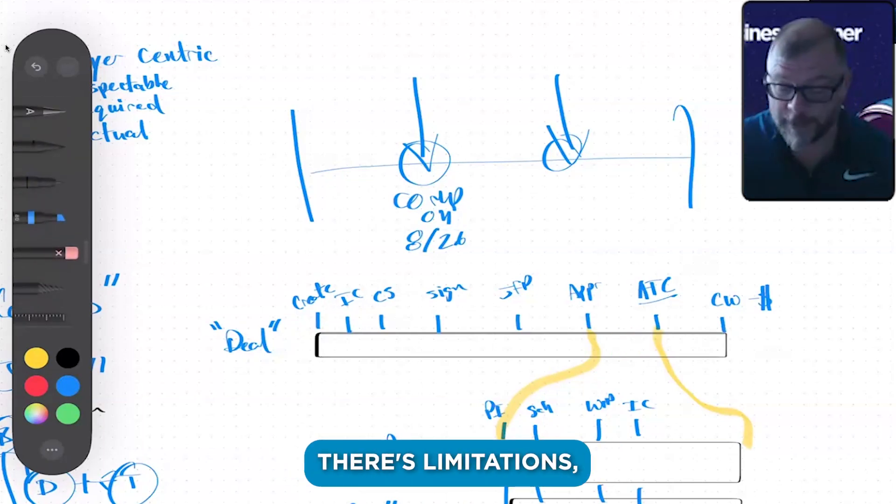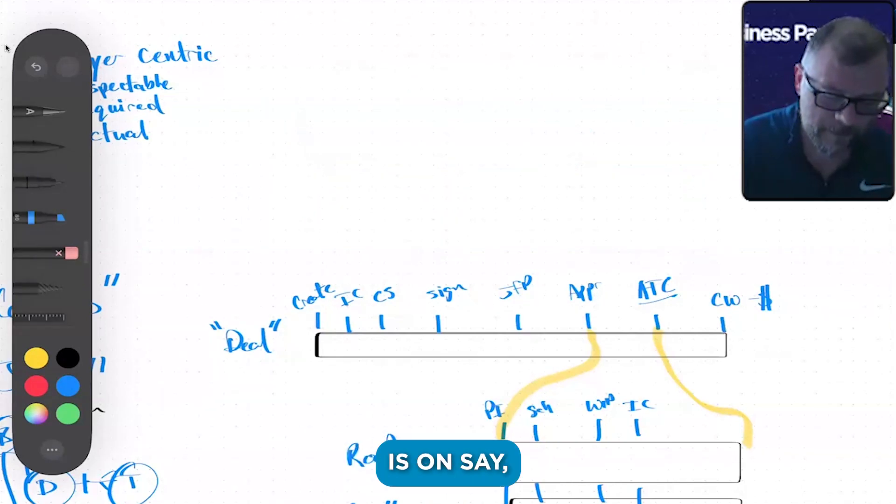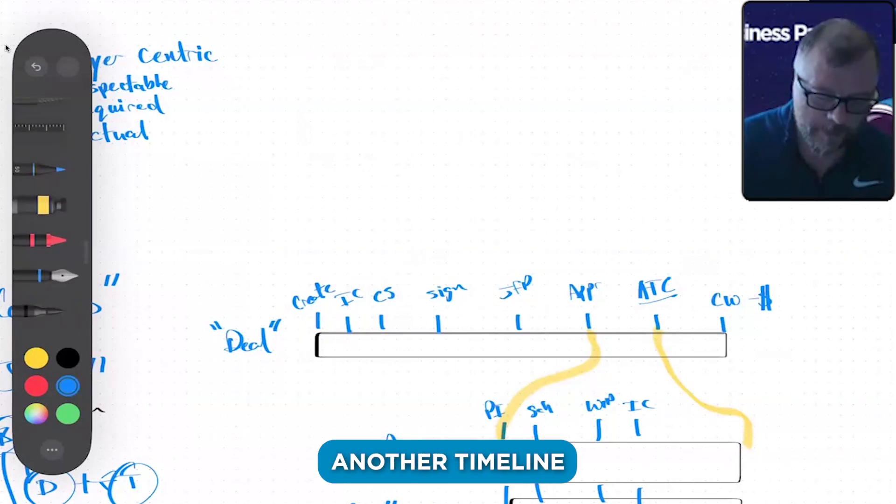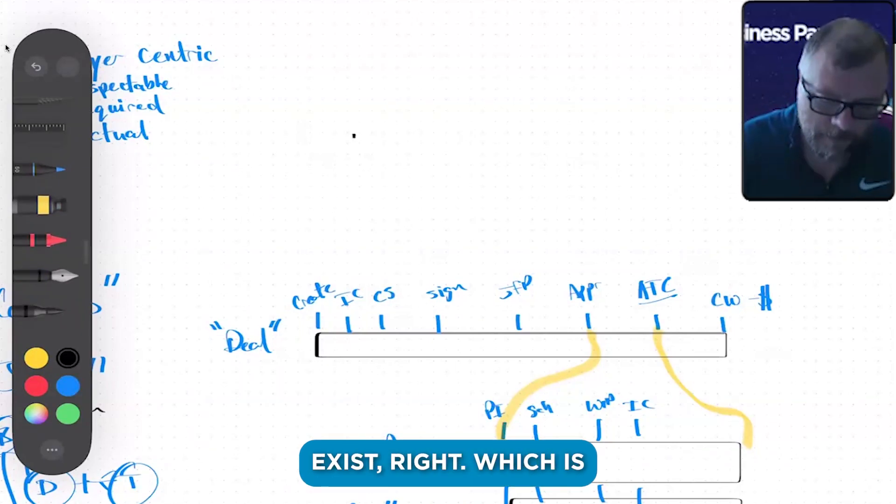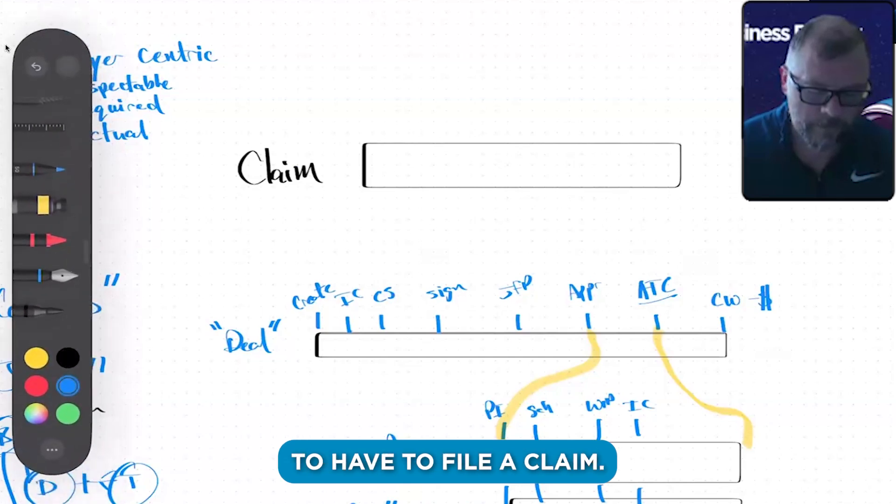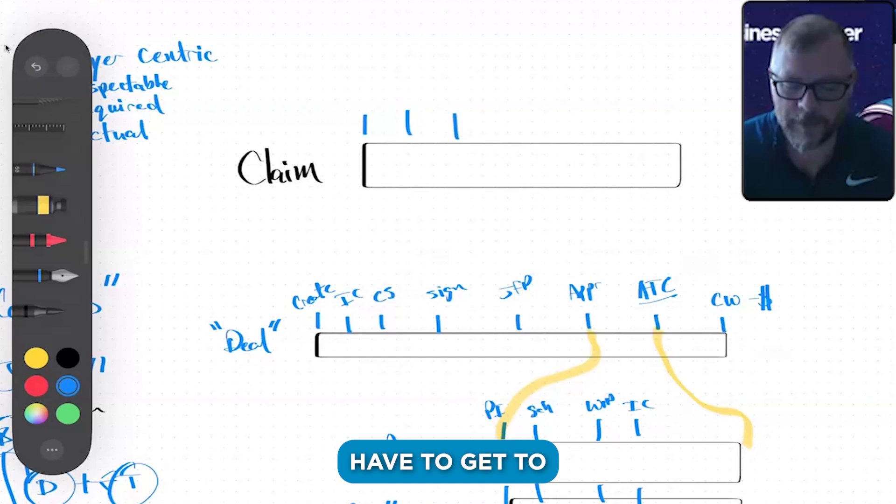The other thing that happens is on, say, an insurance pipeline, you have another timeline that's going to exist, which is your claim. Because you're going to have to file a claim, then you're going to have to get your scope determination, then you're going to get your paperwork, and then you're going to have to get to front-end supplementing.